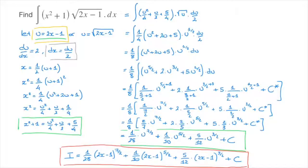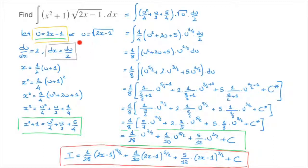That's one of the two options for using the method of substitution when the two functions being multiplied are a polynomial and a radical function with a linear inside it. In our next tutorial, we'll use the second option in which the variable we define will be the entire radical function. That's it for this tutorial.